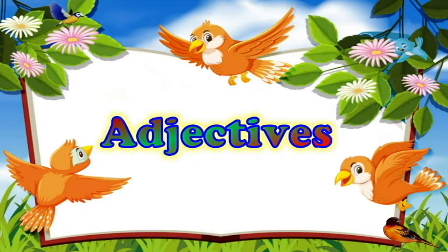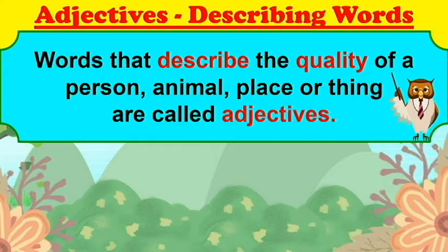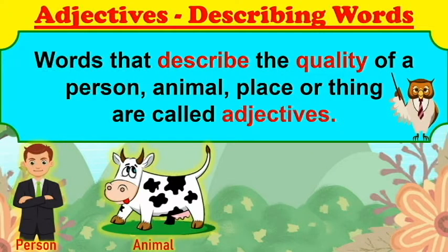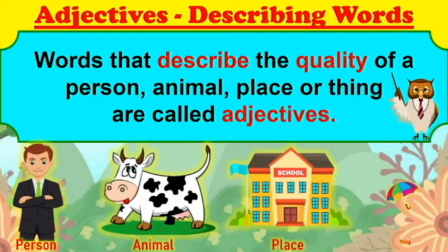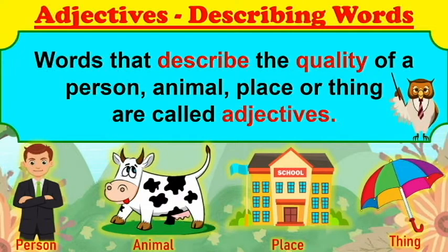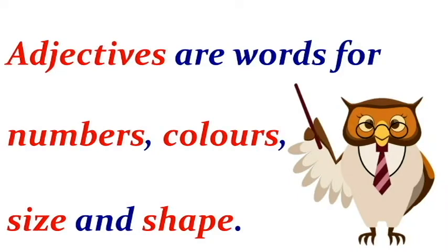Hello everyone, today we will be discussing about adjectives. Words that describe the quality of a person, animal, place or thing are called adjectives. Adjectives are words for numbers, colors, size and shape.